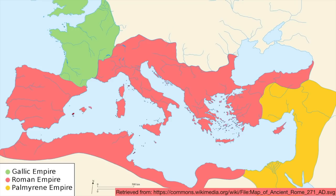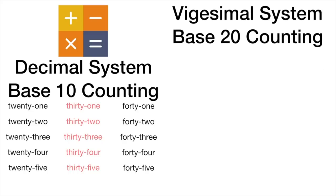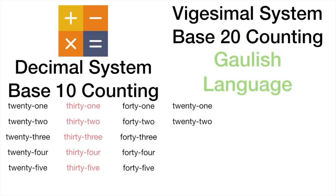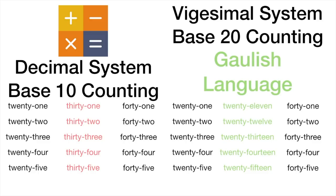If we think back to the time of the expansion of the Roman Republic, modern-day France was inhabited by the Gaulish people. In the Gaulish language, a cousin of modern-day Gaelic, they used base 20 counting, meaning they would count from 1 to 19, then 20 to 39, where 30 is 20-10, 31 is 20-11, 32 is 20-12, and so on. Each 100 has five blocks of 20, rather than our system which uses 10 blocks of 10.